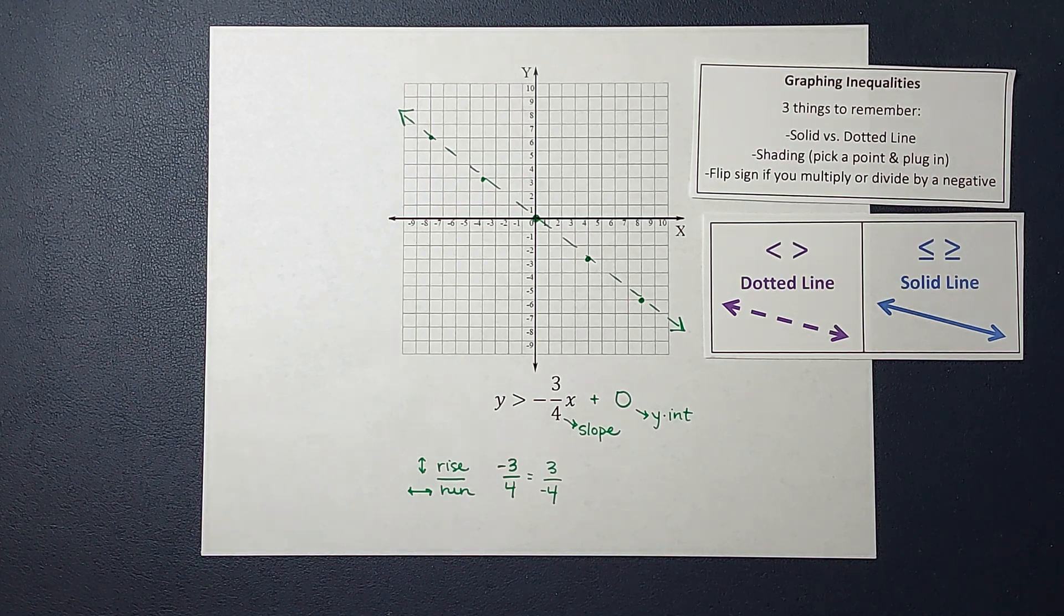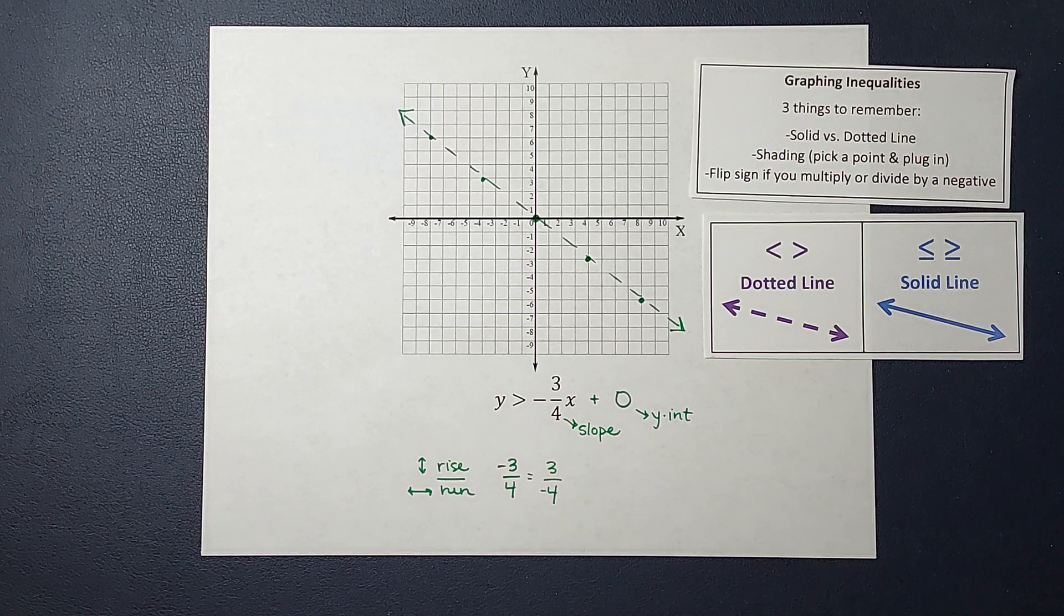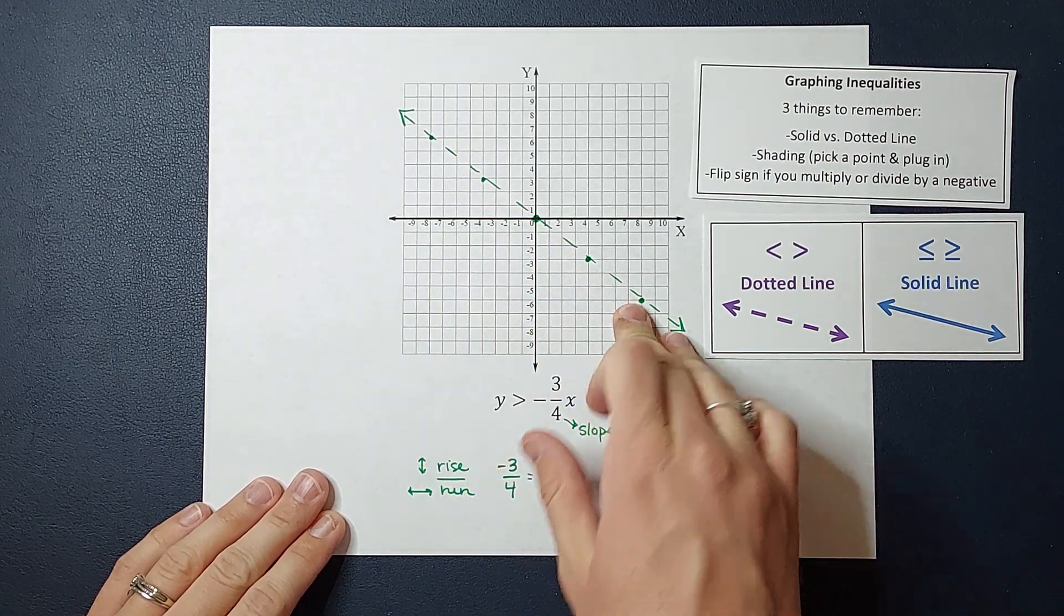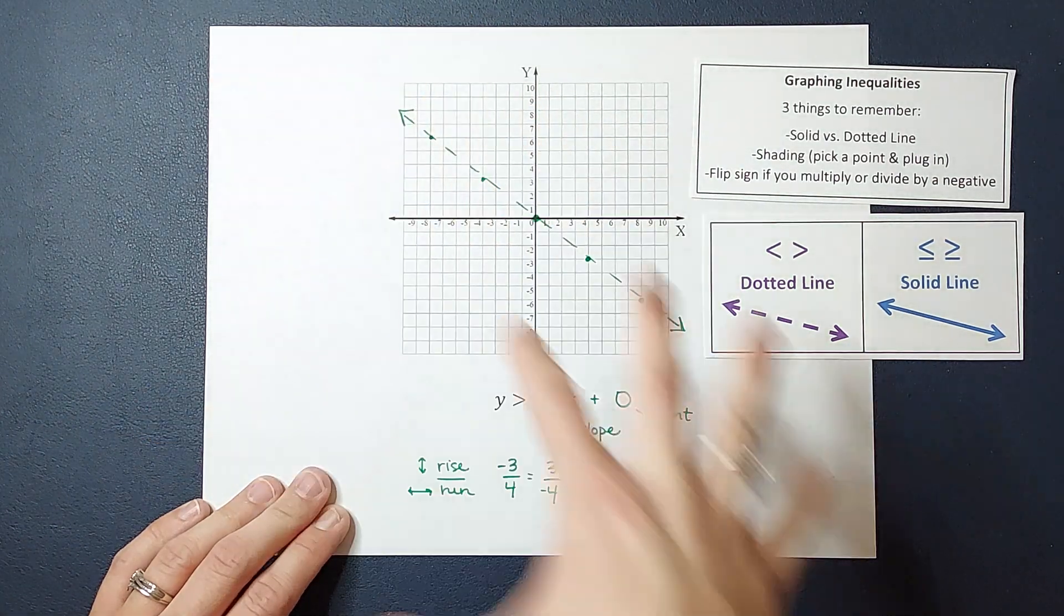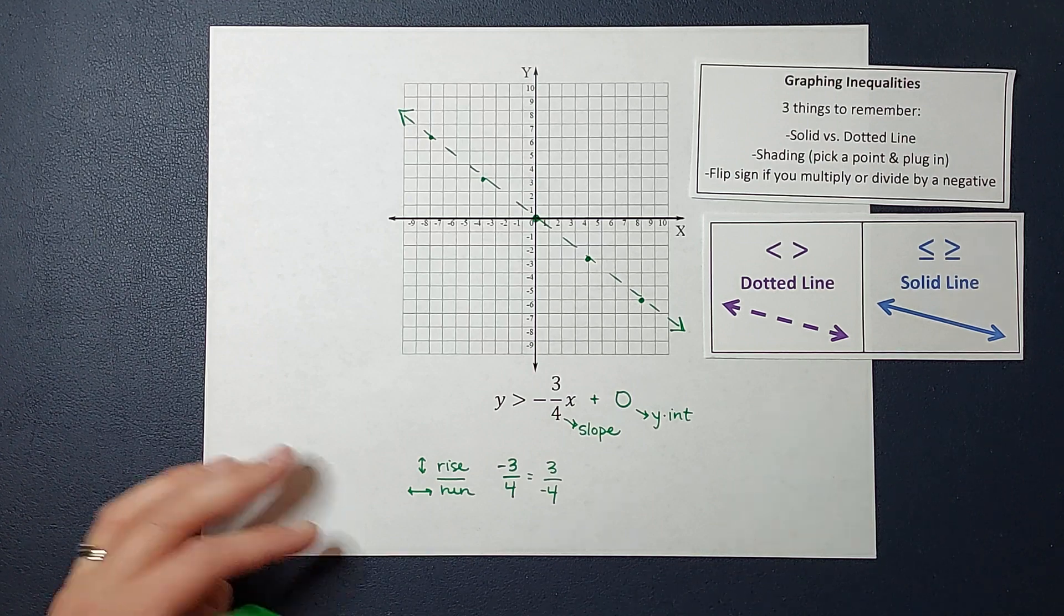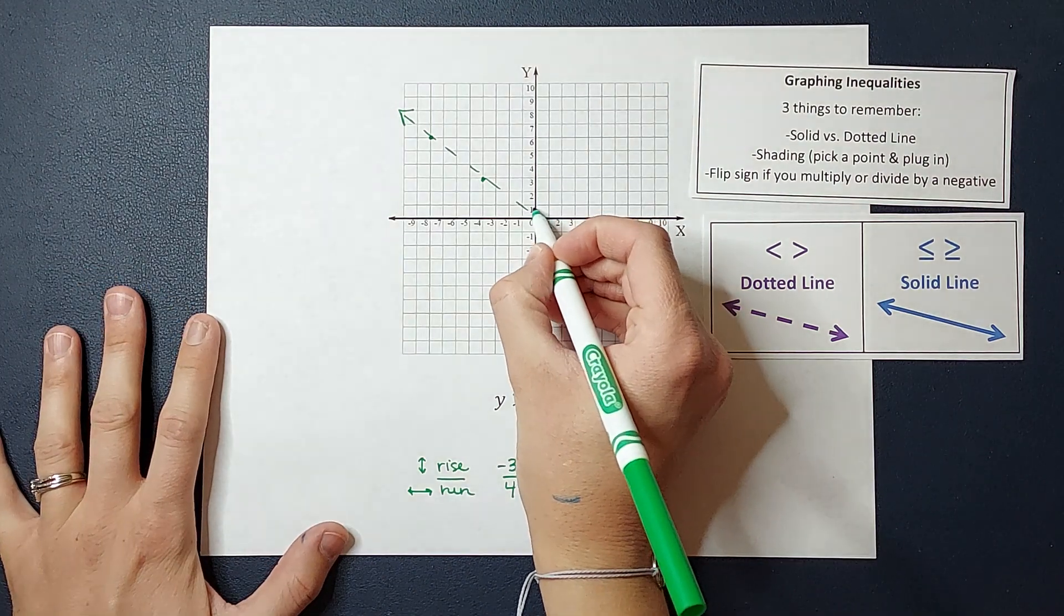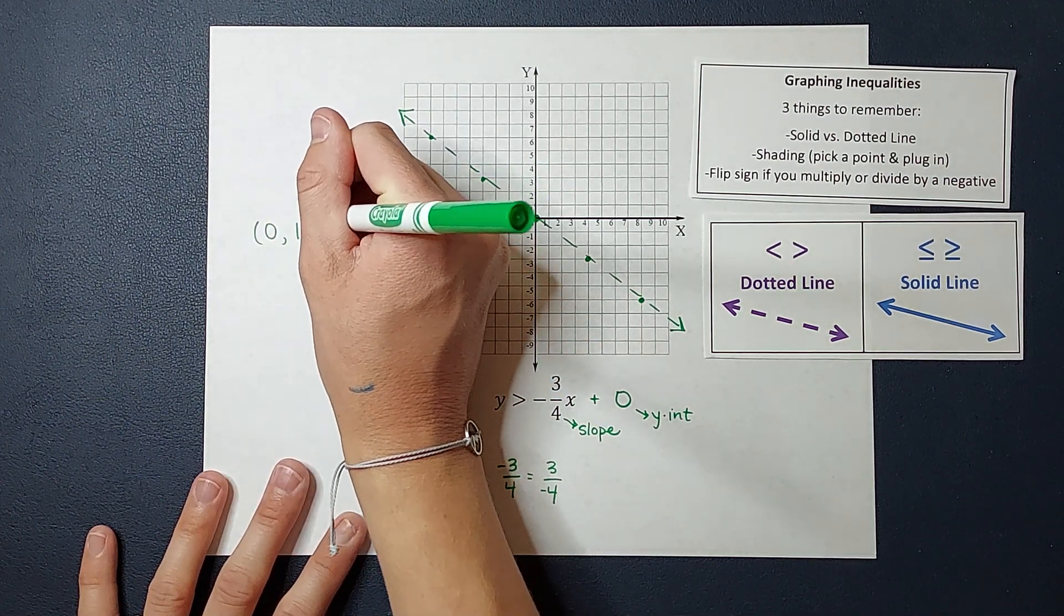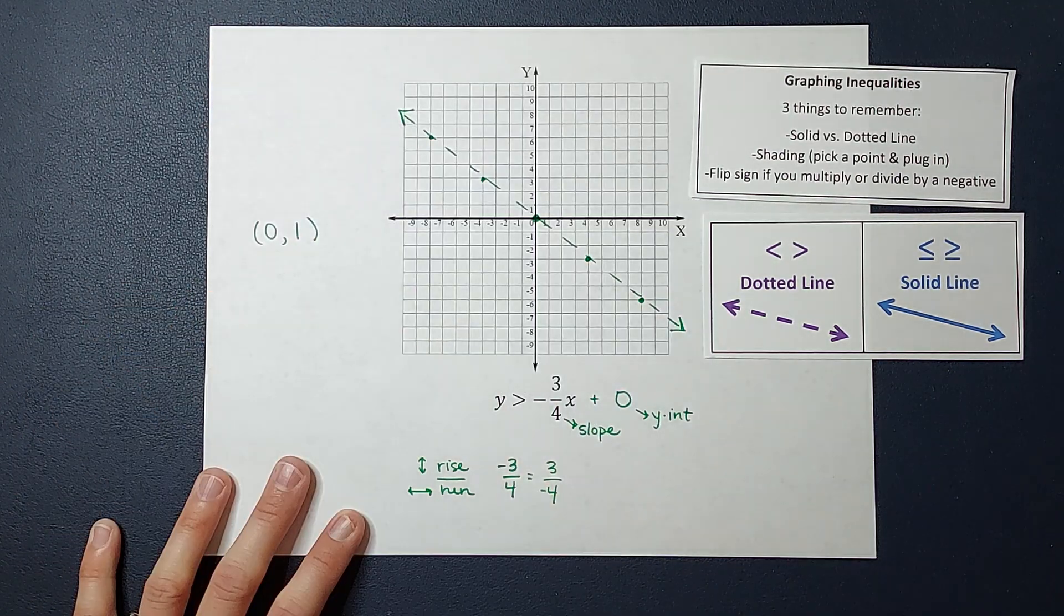Now normally we like to make it as easy on ourselves as possible. So I usually pick 0, 0 to plug in. But the kind of bad news about this problem is 0, 0 actually lies along my line, so I can't plug it in. If I plug that in, I won't know which side to shade because it's along the line. So I can't pick that one, which is normally the one I like to pick. But I can pick something that is almost as easy. So I'm going to pick 0, 1, that point right there, and we're going to plug 0, 1 in. I could literally plug any point in that isn't along this line, but I want to be nice to myself.